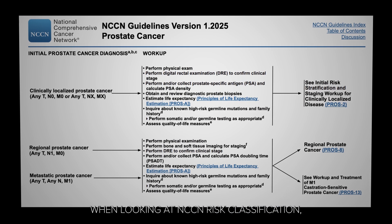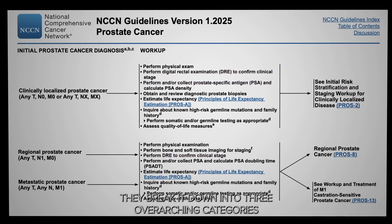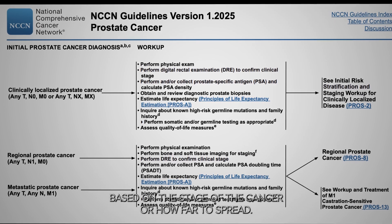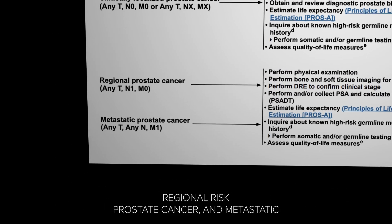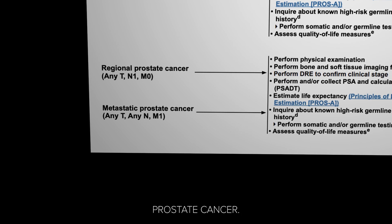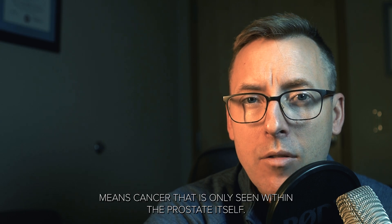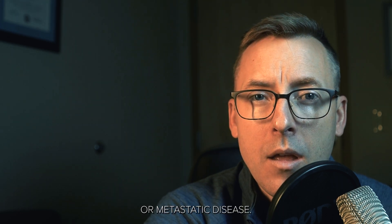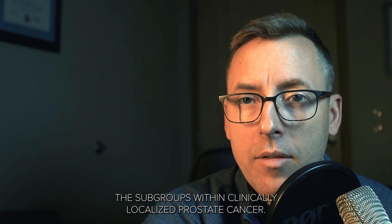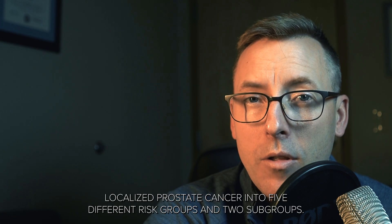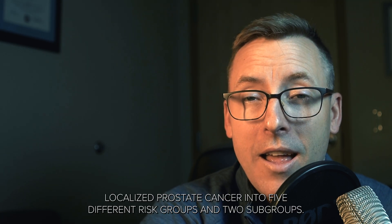Looking at NCCN risk classification, they break it down into three overarching categories based on the stage of the prostate cancer or how far it has spread. Those three categories include localized prostate cancer, regional risk prostate cancer, and metastatic prostate cancer. Clinically localized prostate cancer means cancer seen only within the prostate itself, with no lymph node involvement or metastatic disease. The NCCN has broken clinically localized prostate cancer into five different risk groups and two subgroups.